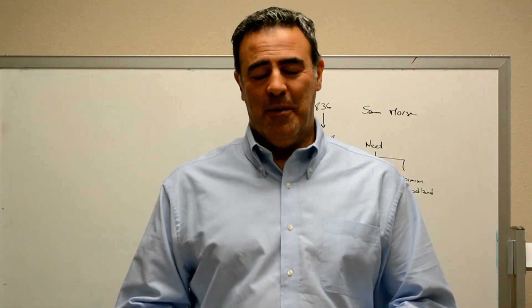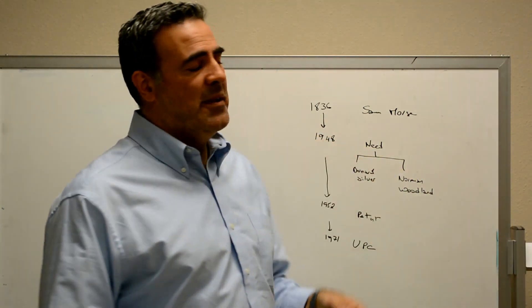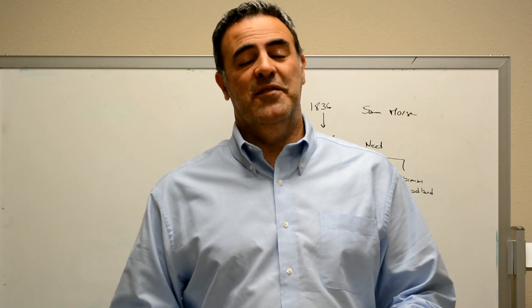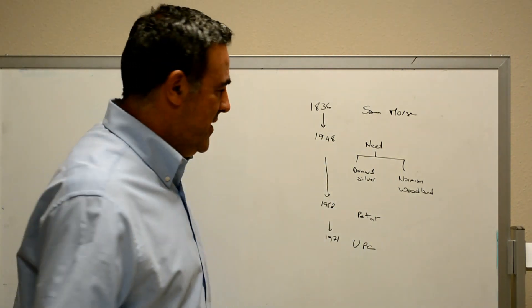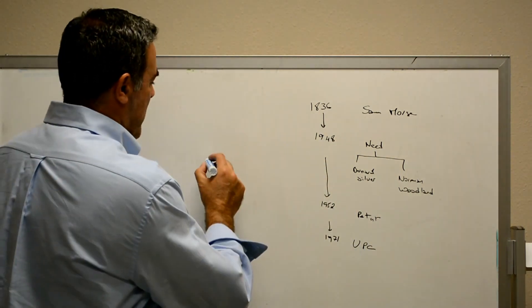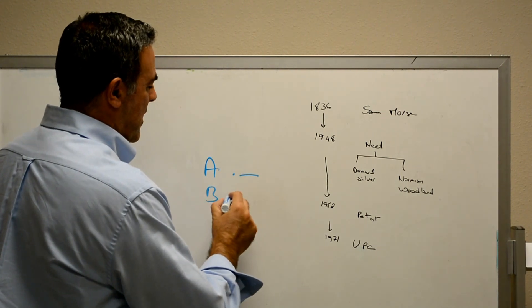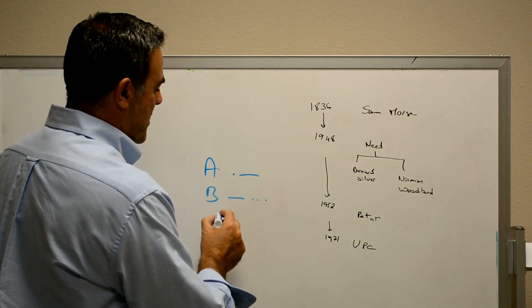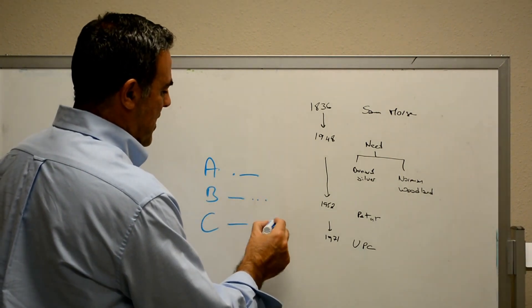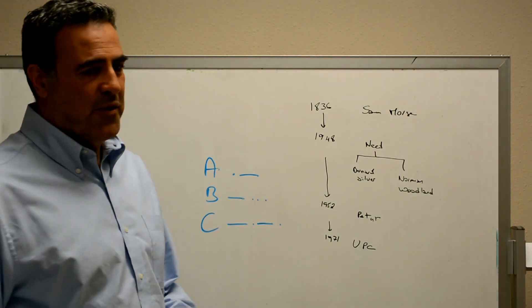Today's video we're going to define what a UPC is and what a barcode is. To start that definition we have to go all the way back in history to 1836 when Samuel Morse invented Morse code. Morse code is a representation of the alphabet in dashes and dots. For example, the letter A is a dot and a dash, the letter B is a dash with three dots, and the letter C is a dash dot dash dot, and so on and so forth.